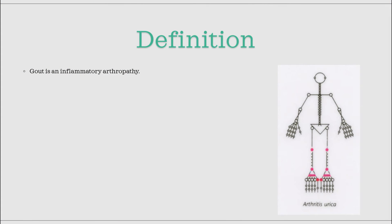Gout, or arthritis urica, is a disease of the joint called arthropathy. Classically, gout starts off by affecting one big toe and it later spreads on to affect other joints. The picture on the right shows the most commonly affected joints, but remember, gout can start in any joint and it can affect more joints at the same time in the beginning as well.